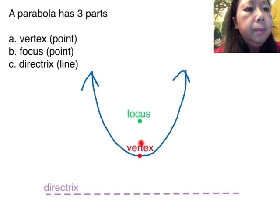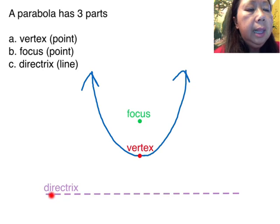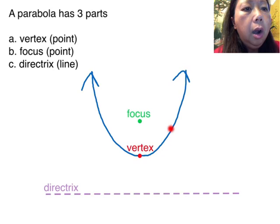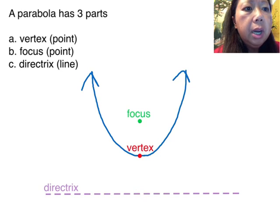There's a vertex — it's a point. There's a focus — it's a point. And there's a directrix, which is a line. What's interesting is the vertex is actually lying on the parabola itself. The focus does not, and the directrix does not. But the vertex is exactly between the focus and the directrix.